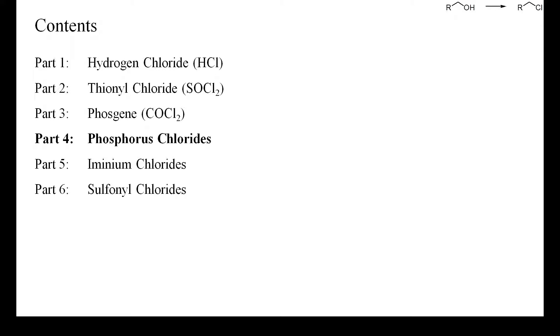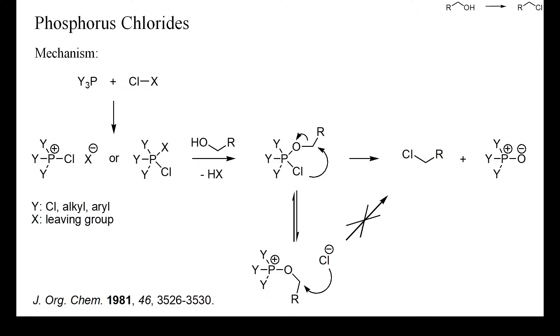For larger-scale preparations, however, phosphorus-based reagents are less popular because the disposal of phosphorus waste can be difficult. Particularly well suited for the preparation of alkyl chlorides from sensitive alcohols are phosphorus pentachloride and mixtures of triaryl or trialkyl phosphines with a chlorinating reagent.